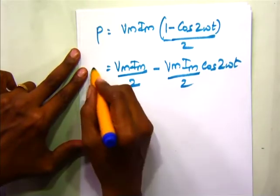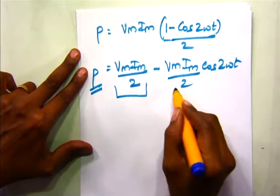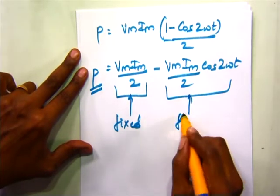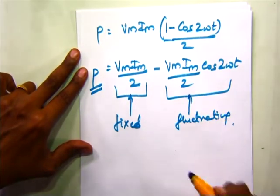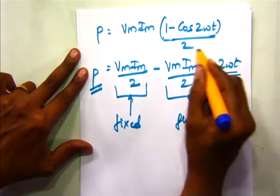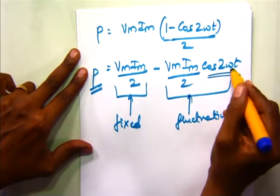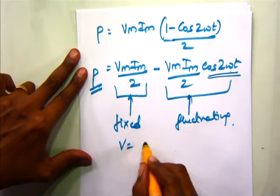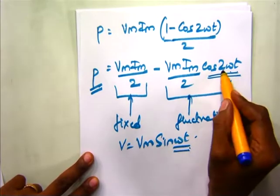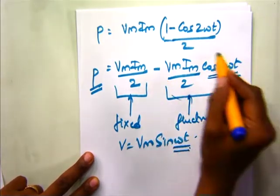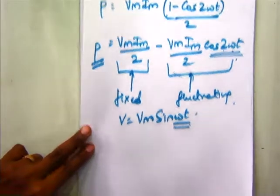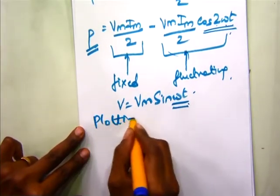We can say that the power P consists of two parts: a fixed constant part and a fluctuating changing part. The term cos of 2 omega t means this fluctuating part rotates at twice the supply frequency. Our supply voltage was Vm sin omega t — only omega t — but here it is 2 times omega t, so the fluctuating part is rotating at twice the supply frequency.